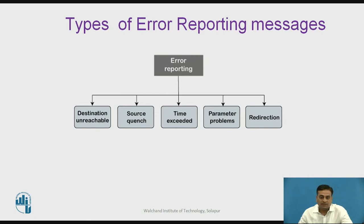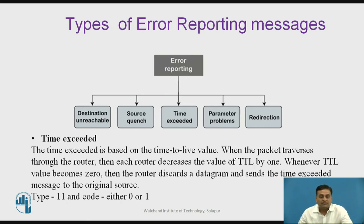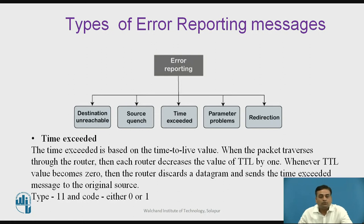The next type of message is the Time Exceeded message, generated in two cases. The first case is when the Time to Live field of the IP header becomes zero — the packet is discarded and the router generates a Time Exceeded ICMP error message to be delivered to the original source. In the second case, if one of the fragments making up the datagram does not reach the destination within a set time interval, all fragments are discarded and a Time Exceeded message is generated for the original source. The type field contains value 11 and the code is either 0 or 1.